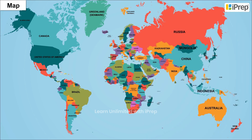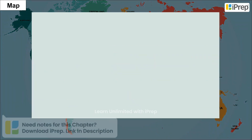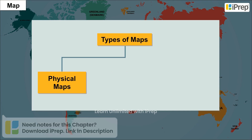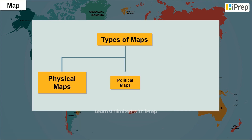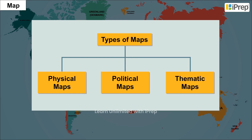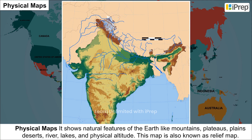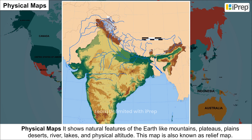Broadly, maps are categorized into three types: Physical Maps, Political Maps, and Thematic Maps. Physical Maps show natural features of the Earth like mountains,